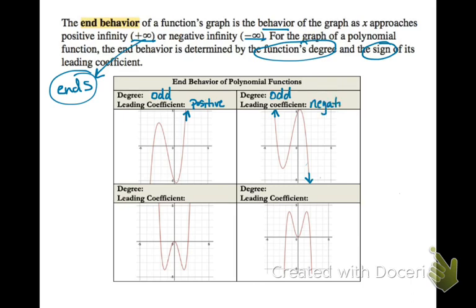If you have a graph that is down on the left and up on the right, its end behavior is opposite — down and up — kind of like a positive slope of a line. The leading coefficient will be positive. And if it's up on the left and down on the right, then the leading coefficient will be negative.